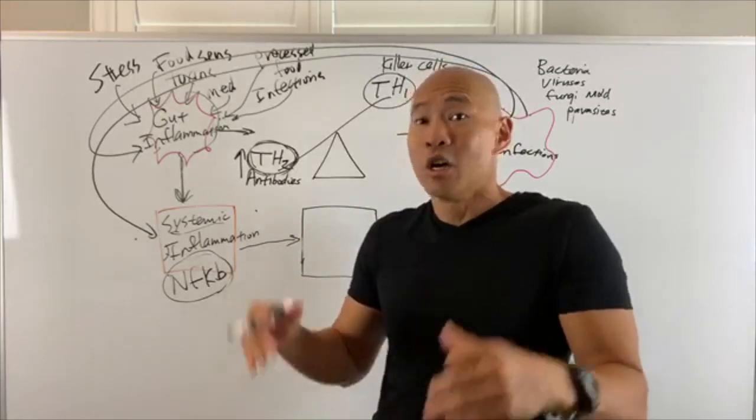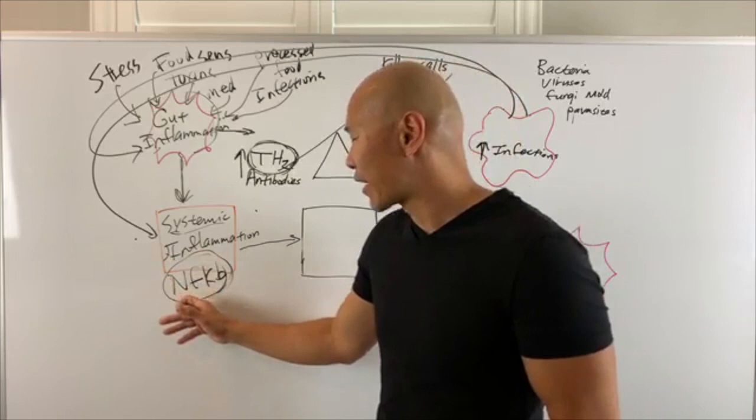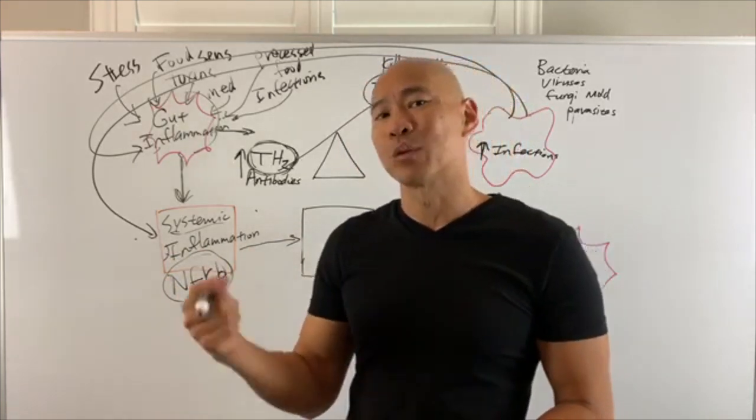And this is what's called the common final pathway for inflammation. All inflammation eventually leads to inside every individual cell with a cell saying, oh my God, red alert, red alert, we're under attack. And these NF-kappaB trigger that inflammatory response within the cell.